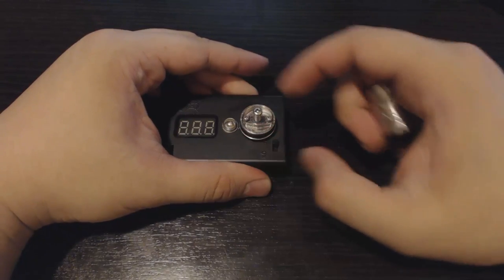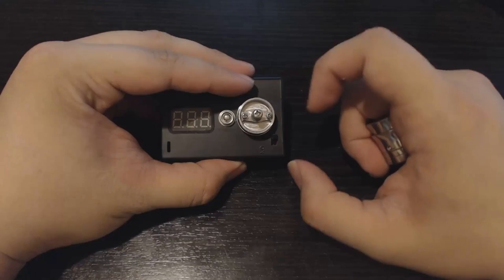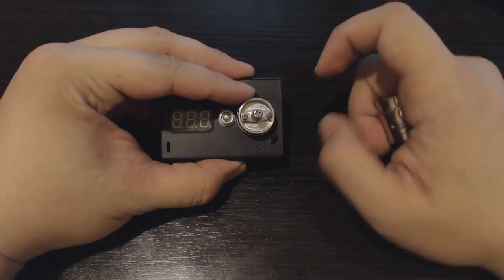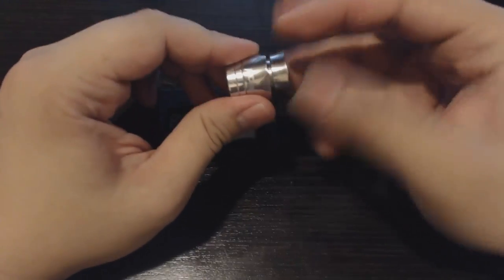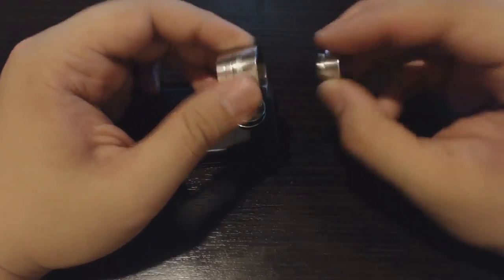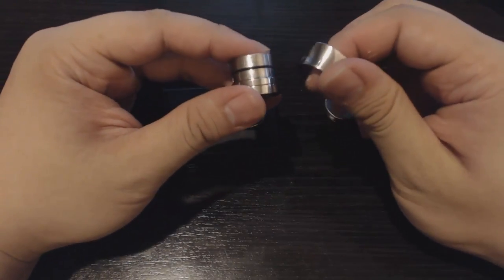Okay, over here, it is technically like a three-prong atomizer with the juice wells over here. And then the top cap screws off, like so. And then this is the rest of the body with the airflow ring.